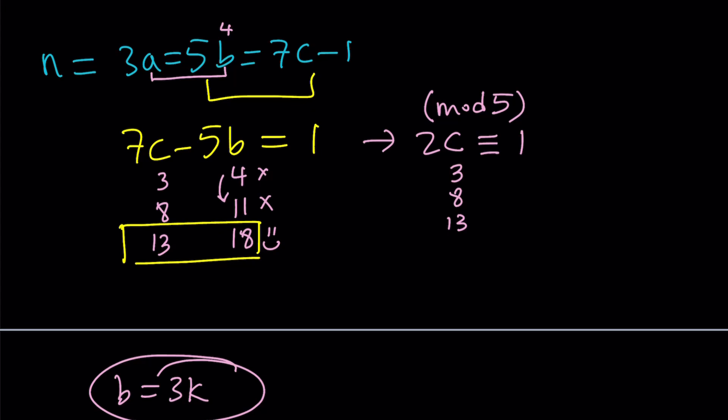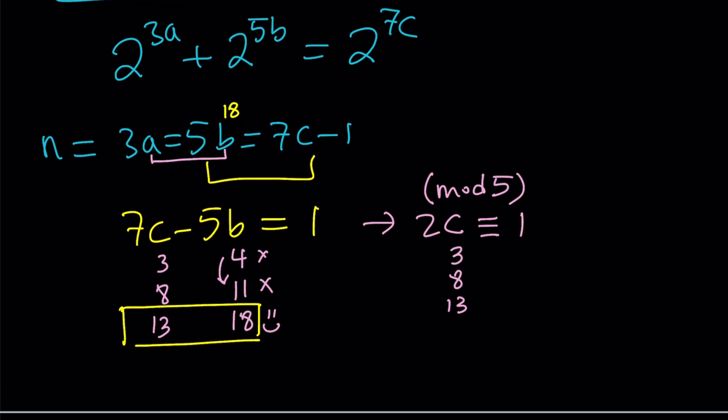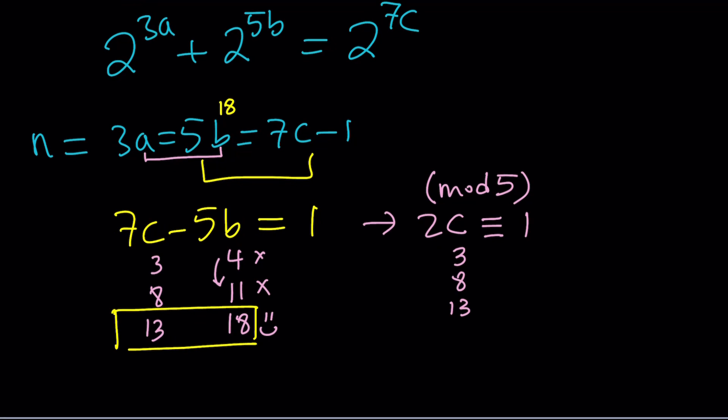Let's go ahead and plug in 18 for b here. And we're going to find the value of a from there. If b is equal to 18, then 3a is going to be 90, and a is going to be 30.